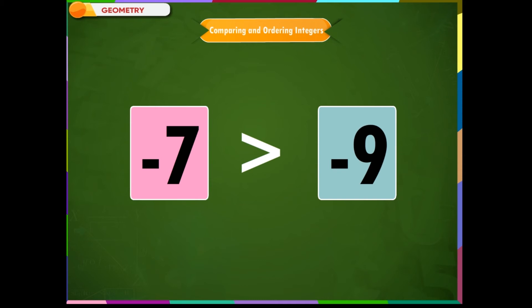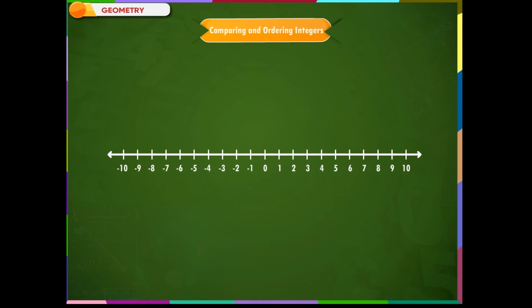Let us understand this more clearly using a number line. On a number line, when we move towards the right of 0, we get bigger numbers. For example, 2 is greater than 1, and 3 is greater than 2, and so on. Similarly, when we move in the opposite direction from 3 towards the left, we get smaller numbers — for example, 2 is smaller than 3, and 1 is smaller than 2, and so on.